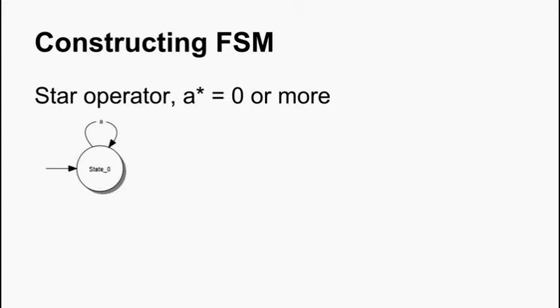Then we have got the star operator, for example a star, which means zero or more repetitions of a. So, in this case if we just loop around, staying in the same state. Or if we have got a substring starred, then we would loop back to the start of that substring.